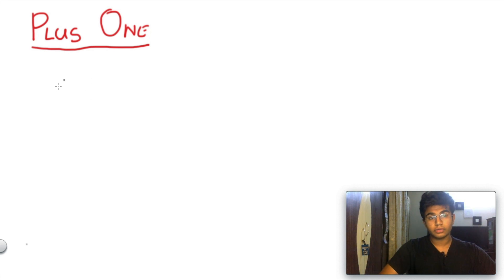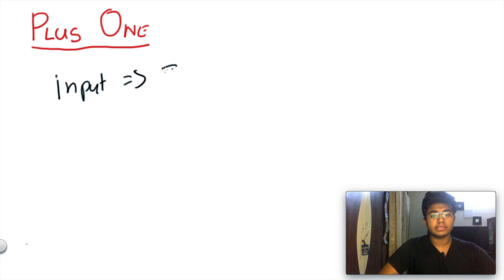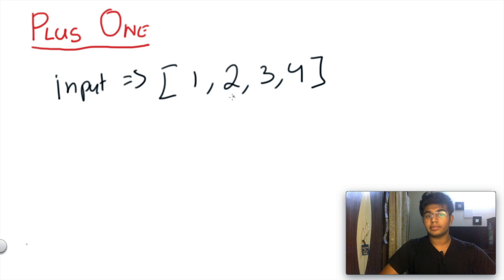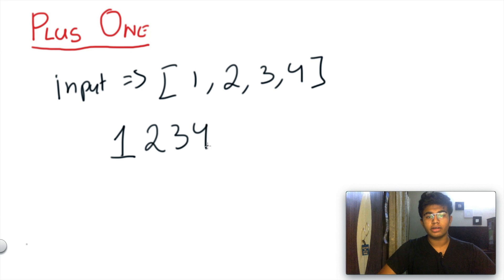Let's first understand the question before we start solving it. Let's say we're given an input of [1, 2, 3, 4]. One is going to be the most significant number, then we have two, then three, then four. So this list is the same as the number 1234.